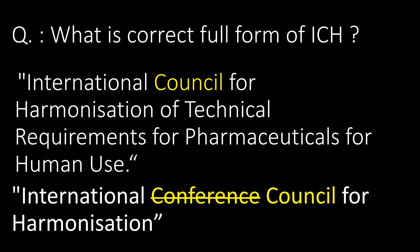What is the correct full form of ICH? The correct full form of ICH is International Council for Harmonization of Technical Requirements for Pharmaceuticals for Human Use. Here in ICH, the C stands for Council.